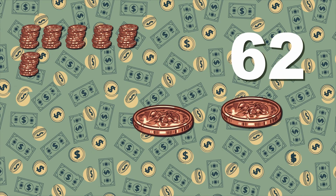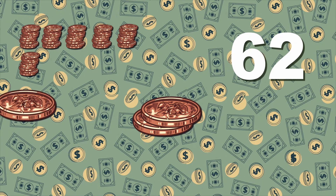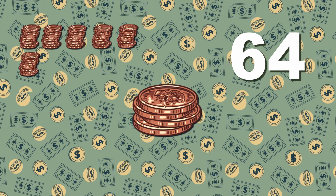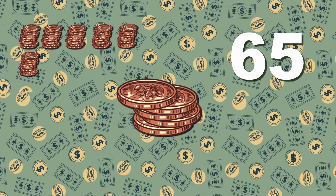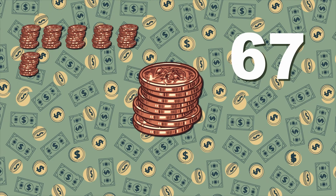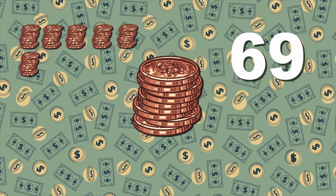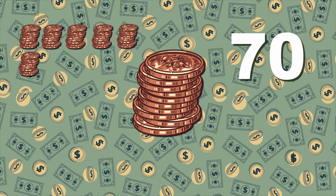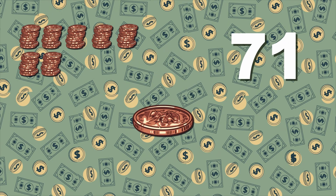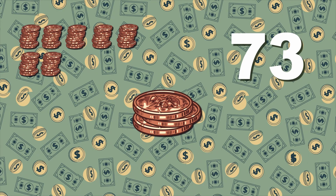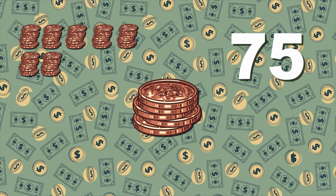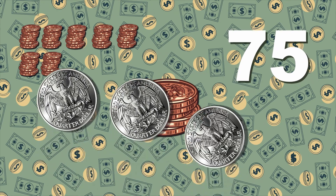61, 62, and then there's 63. 64 pennies, 65, and 66. 67, 68, 69, and 70 — you can't miss. 71, 72, 73, and 74. 75 equals 3 quarters, now let's count some more.